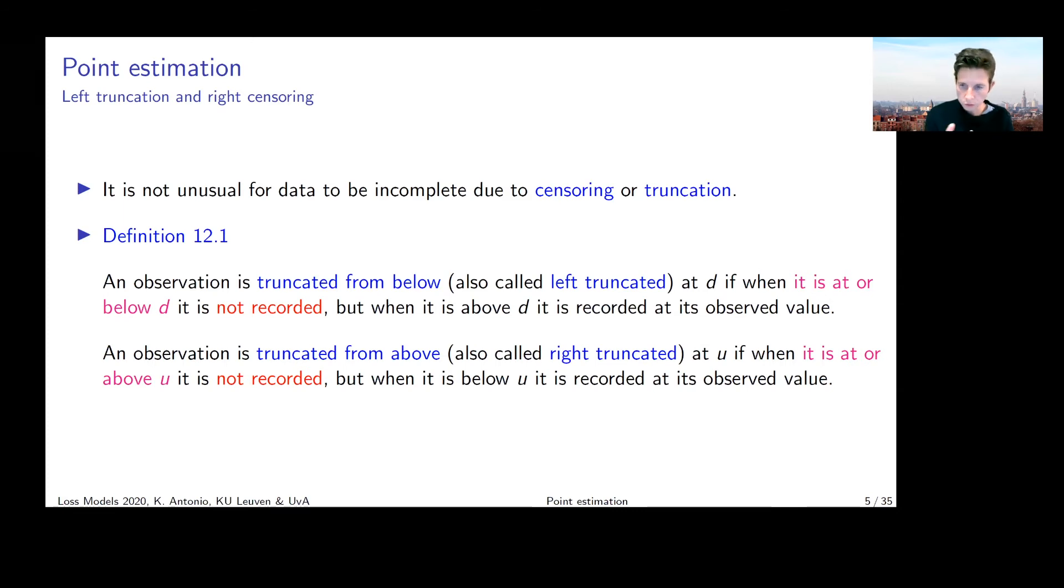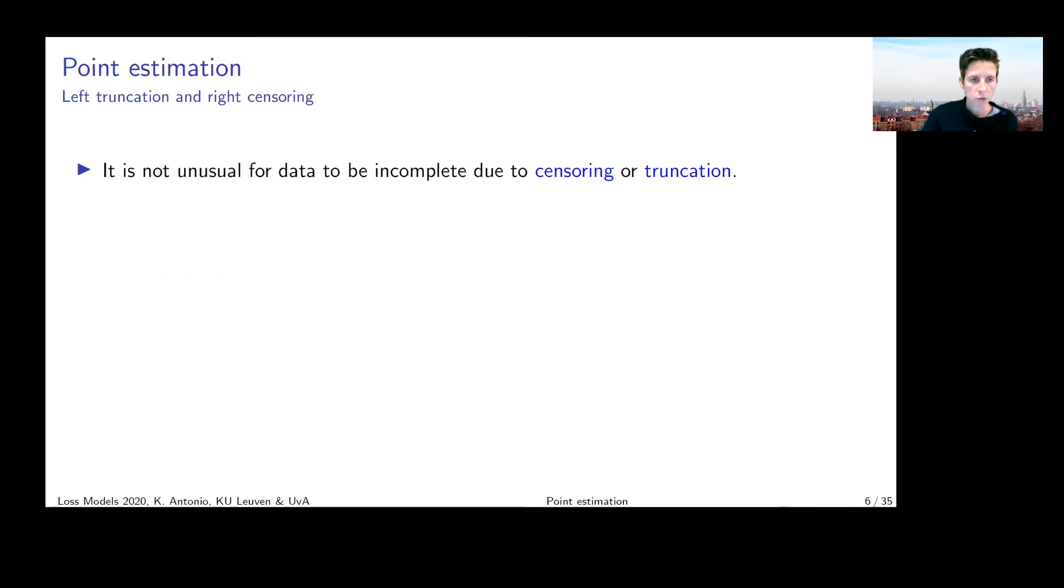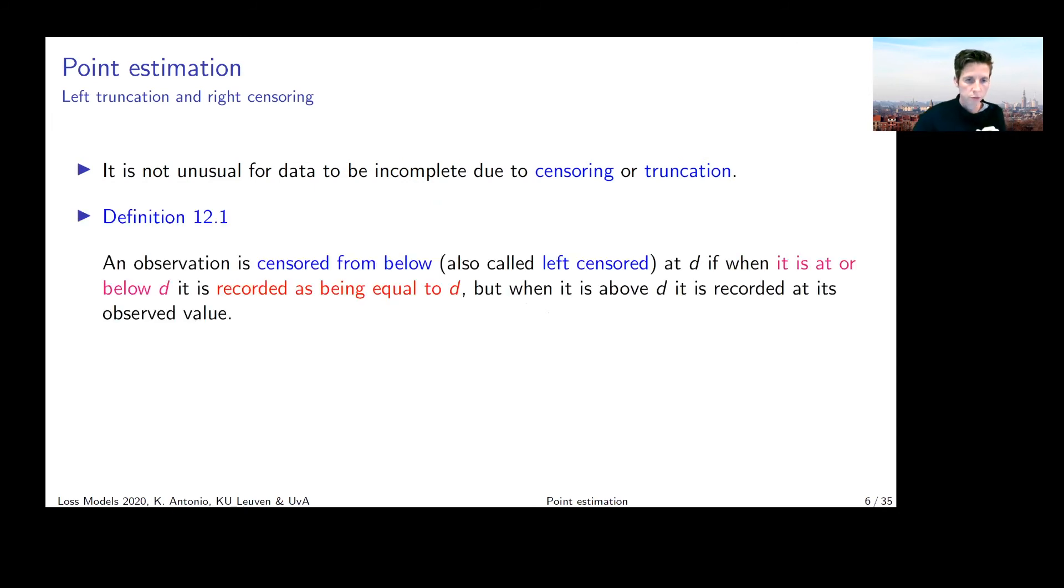You can also have right truncation. An observation is right truncated at value U, meaning if it is at or above U, it's not being recorded in the sample. But when it is below U, it is recorded at its observed value. The important thing with truncation is that it creates missing data. Observations do not appear in the sample because they don't go over the threshold. Let's first go to the definitions of censoring.